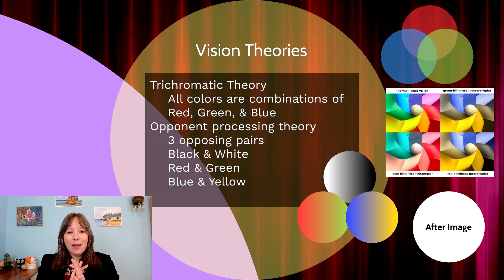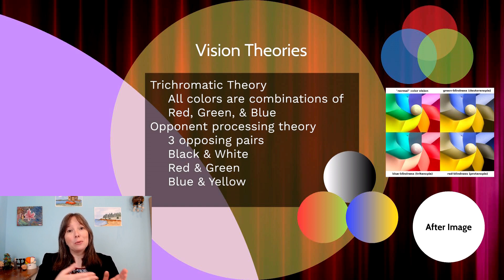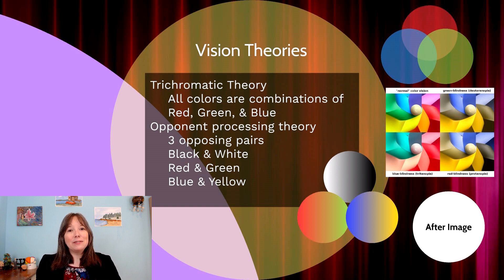Another vision theory is the opponent processing theory. This is the idea that it's not just the three cones firing, but also the absence of these cones firing that results in color perception. When a red cone stops firing, we may see things as more green; when a green cone stops firing, we may see things as more red, because they're opposite on a color wheel. Although we don't have yellow cones, when a blue cone stops firing we may perceive things as more yellow.